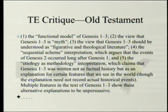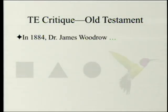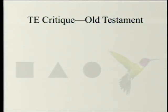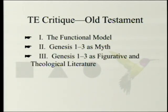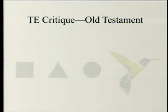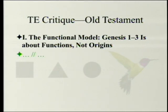Multiple features in the text of Genesis 1 through 3 show these alternative explanations to be unpersuasive — that's what John Currid is going to argue. He starts with the story of Dr. James Woodrow in 1884, showing that is similar to what we have today. He then discusses Peter Enns and John Walton, who figures prominently as one of the more prominent scholars. We already covered the functional model and the myth view last week, and now we are at figurative and theological literature.